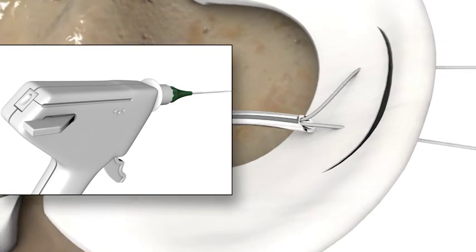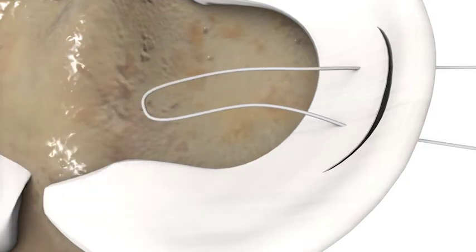After advancing the second needle and removing it from the knee, carefully remove the gun and cannula out of the knee, leaving a suture loop behind. Ensure the suture does not get caught on any part of the gun when removing.